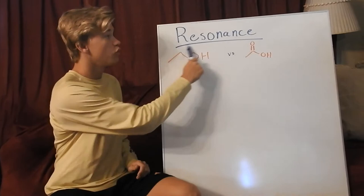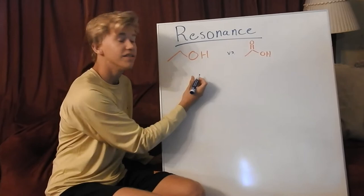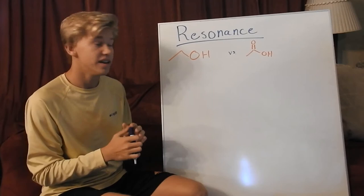Up next, we have R, which stands for resonance. We use resonance in cases where we can't use charge or atoms because they are both the same. In this molecule, if we were trying to use charge, they both have the same formal charge; and with the atom, they are both the same. So now we can utilize resonance to find out which one has the stronger acid.